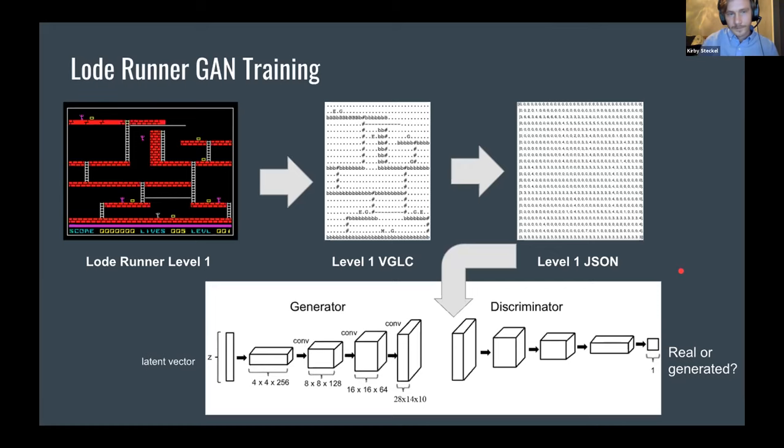So a little bit more on the GAN training. As you see right here, this is a representation of the first level of Lode Runner from the original game. And then here is a character based representation that's located in the video game level corpus, which is a repo on GitHub. Each of these characters correspond to a tile. So you can see these hashtags are the ladders and the enemies are the E and so on. Once we have that representation, we can easily convert it into JSON where each of those characters is represented by a number. And then we can compile all of those to create our training sets.